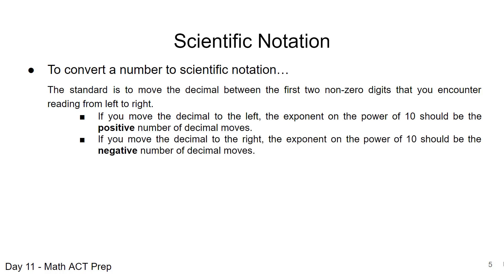In turn, if you have to move the decimal to the right, meaning that you have a really small number, then the exponent on the power of 10 is going to be negative based on the number of moves that you've made for that decimal point.